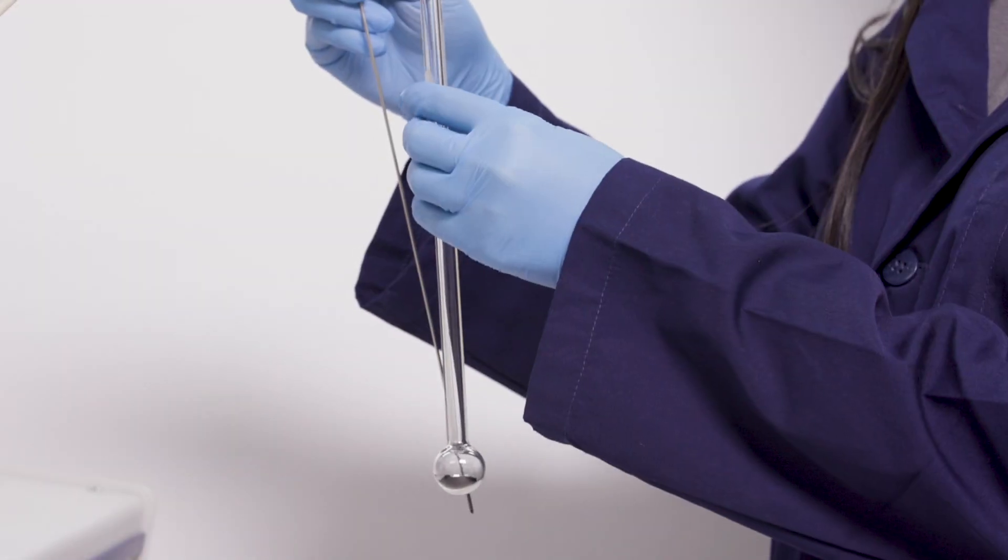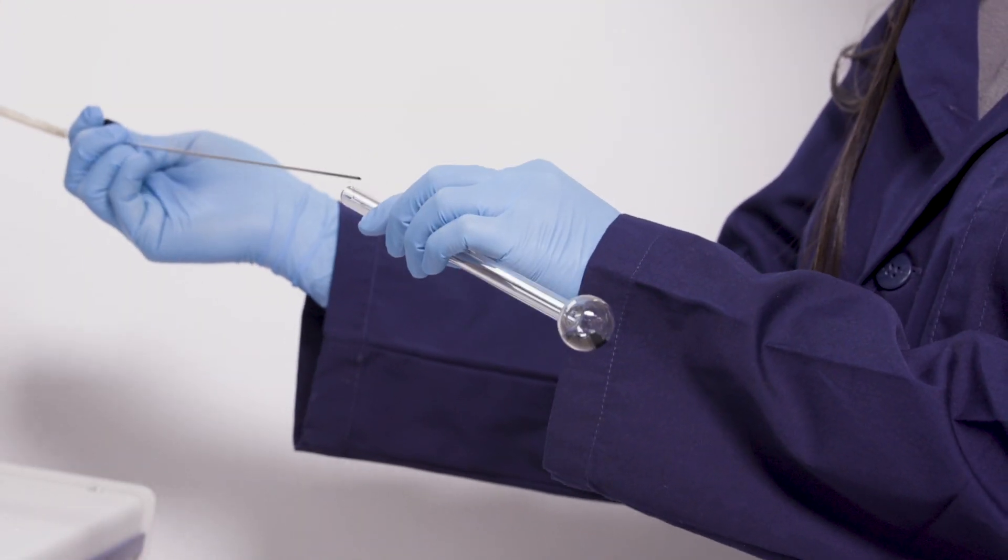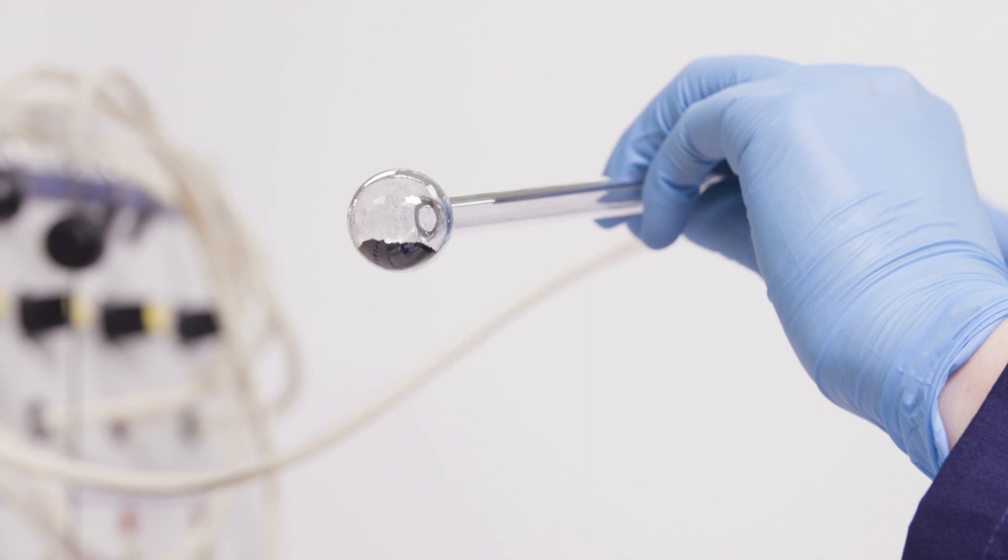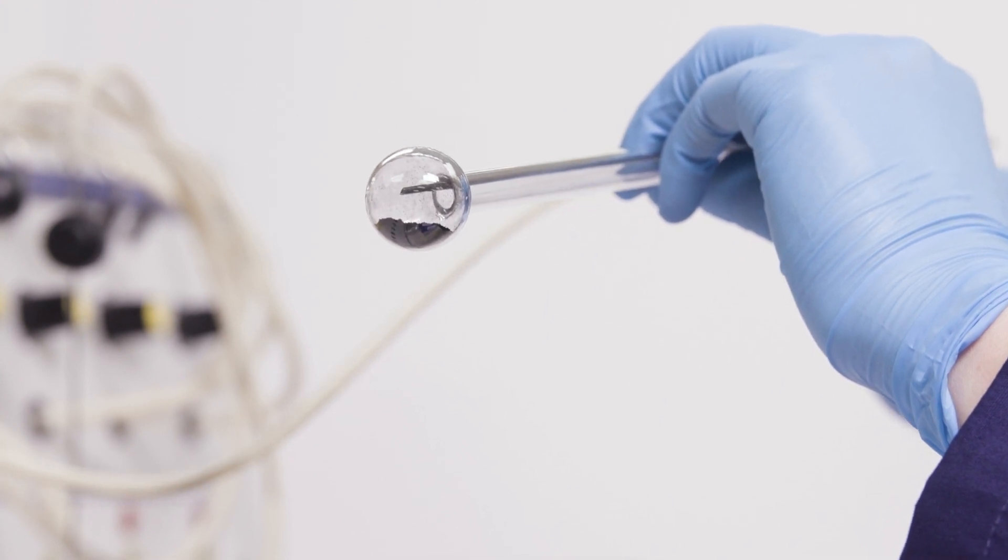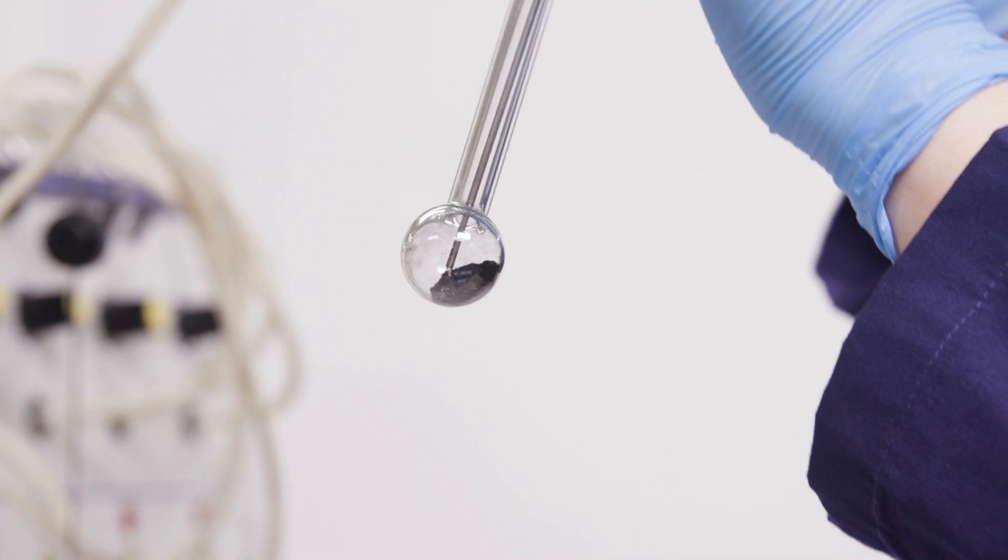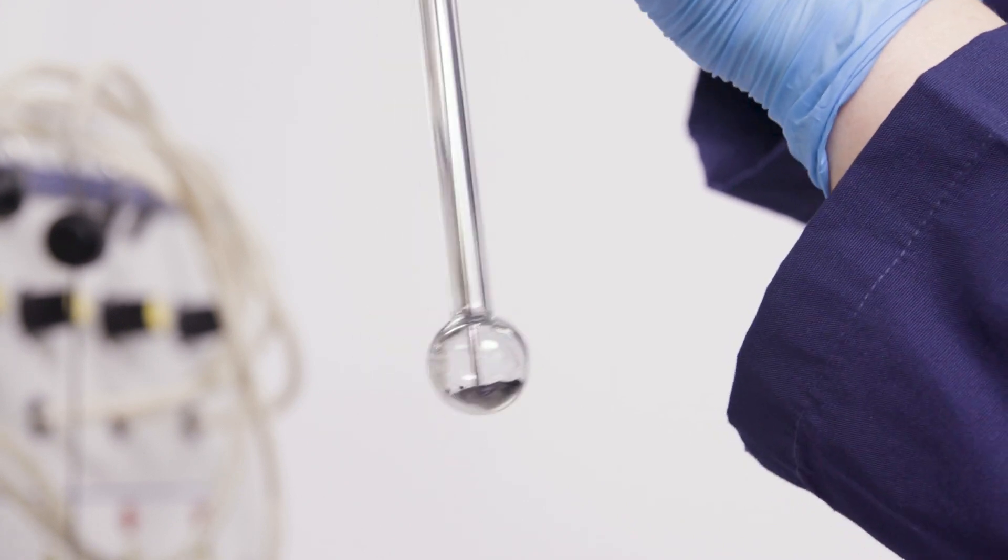When using the flow degas method, make sure to insert the probe all the way to the bottom of the sample bed. Tilting the sample tube can help to insert the probe without touching the sample to prevent clogging the probe.